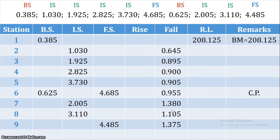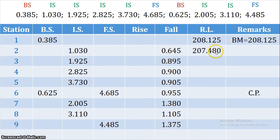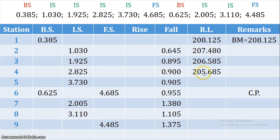Now we calculate the reduced levels. Since this is a downward sloping case, we subtract the fall from the previous reduced level. Starting: 208.125 minus 0.645 gives 207.480. Then 207.480 minus 0.895 gives 206.585. Then 206.585 minus 0.900 gives 205.685. Then 205.685 minus 0.905 gives 204.780.